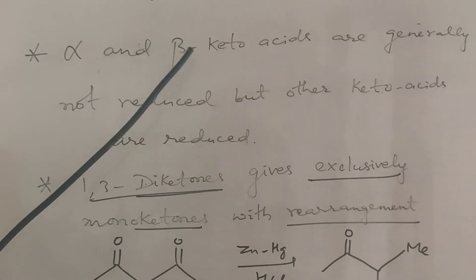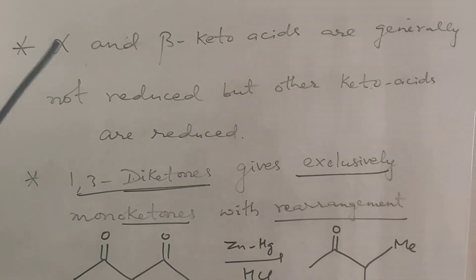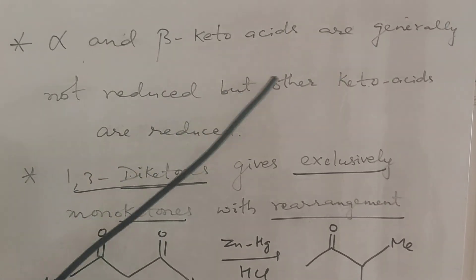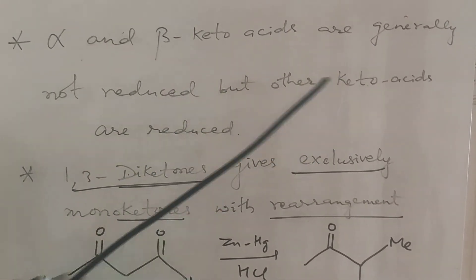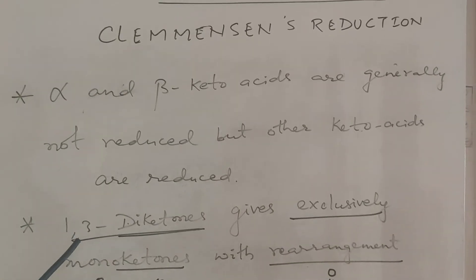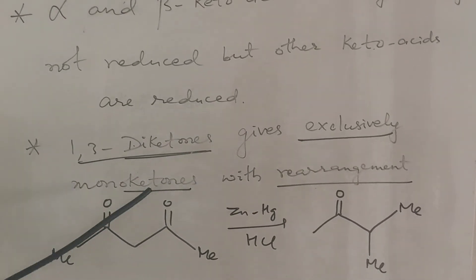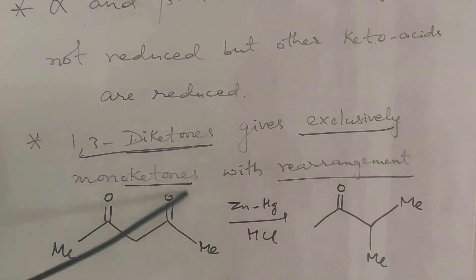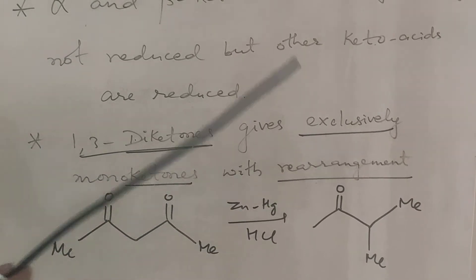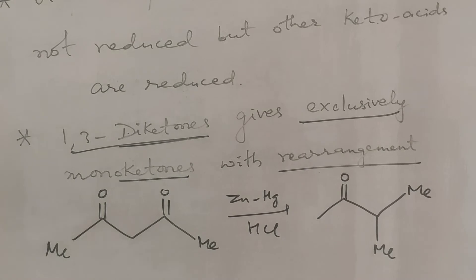Alpha and beta-keto acids are generally not reduced by Clemmensen reduction, but other keto acids are reduced. For 1,3-diketones, the reaction gives exclusively monoketones — one of the ketone groups is reduced while the other remains. There is also a rearrangement that takes place.